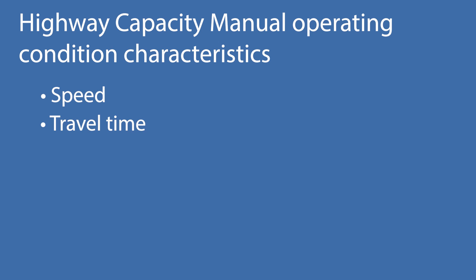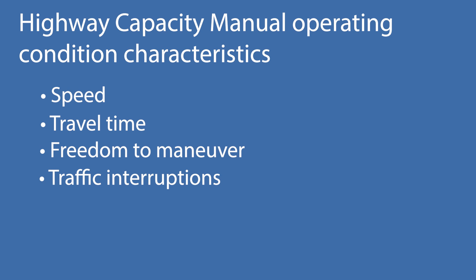The Highway Capacity Manual characterizes operating conditions of a facility in terms of traffic performance measures related to speed, travel time, freedom to maneuver, traffic interruptions, comfort, and convenience.